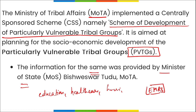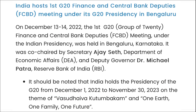Also remember EMRS — Eklavya Model Residential Schools. MOTA is implementing this scheme to provide quality education to Scheduled Tribe students. These model residential schools are for students from 6th to 12th class.